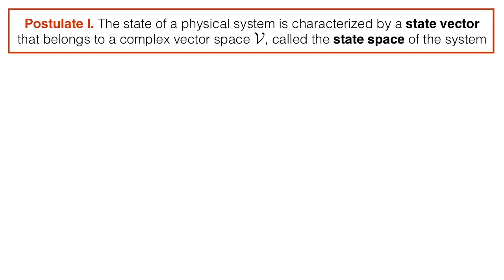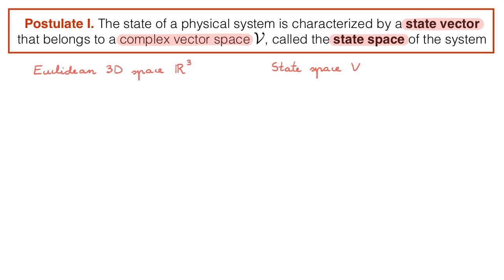State space is the space in which quantum systems live, and therefore you can imagine it is fundamental in the study of quantum mechanics. Indeed, it features in the very first postulate of quantum theory. This postulate tells us that the state of a physical system is characterized by a state vector, and that this state vector belongs to a complex vector space V, which we call the state space of the system. To get a refresher about vector spaces, we're going to draw an analogy between the familiar Euclidean three-dimensional space R3 and this new state space V. When drawing this analogy we're also going to introduce Dirac notation, which is a very convenient notation for describing vectors in state space.